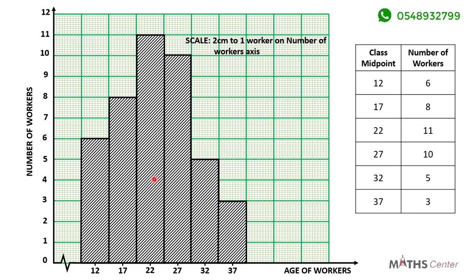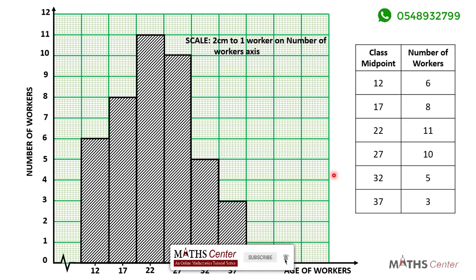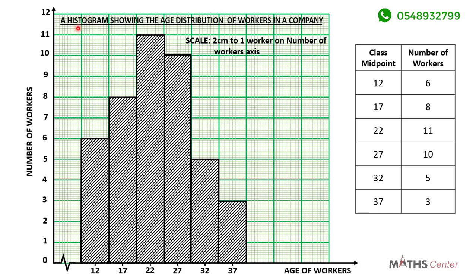After drawing the bars you can add a little design to make it look nice. We will also choose a title for our histogram from the question. The question states that the table shows the age distribution of workers in a company, so my title will be: 'A histogram showing the age distribution of workers in a company.' We have successfully drawn a histogram for the given data using the class midpoints on the horizontal axis. In the next video we are going to draw the same histogram again but using the class boundaries on the horizontal axis.